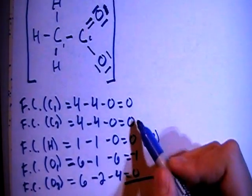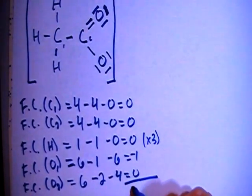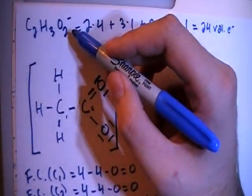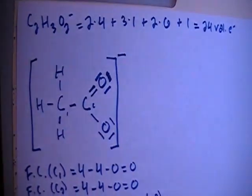All right, if we add all these up, 0, 0, 0, negative 1, 0, that's a negative 1 overall formal charge, which is what we need because the charge on this ion is minus 1. So that's good, that's what we're looking for.